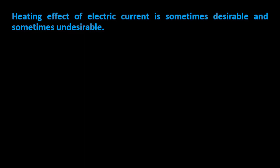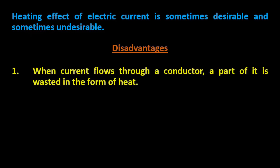The heat produced due to the flow of current through a conductor is sometimes desirable and sometimes undesirable. The first disadvantage of the heating effect is that when current flows through a conductor, a part of the energy is wasted as heat. Not 100 percent of the electric energy is utilized — a small part is wasted in the form of heat.